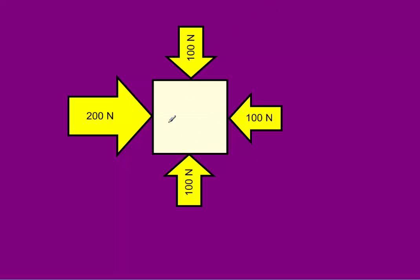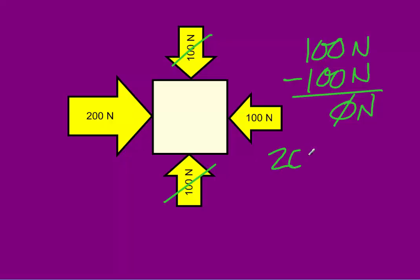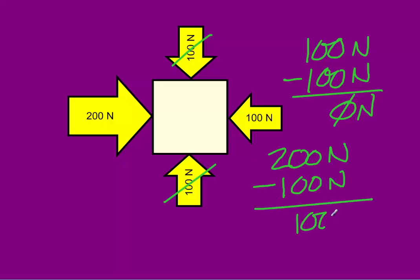What are the net forces on this box? We know there's 100 newtons pulling down and 100 newtons pushing up, so 100 minus 100 gives zero — those forces cancel out and are balanced, so it's not accelerating vertically. We know there's 200 newtons pushing to the right and 100 newtons pushing to the left, so 200 minus 100 gives a net force of 100 newtons. Since the stronger force is pushing to the right, the net force is 100 newtons to the right.